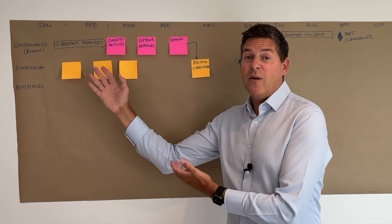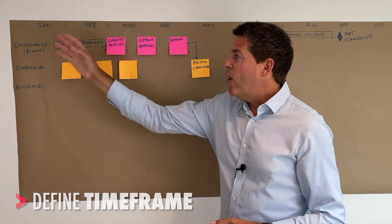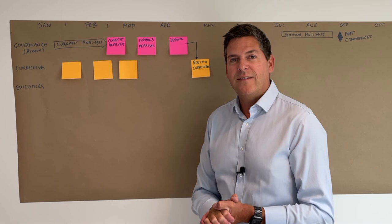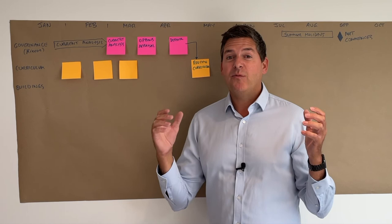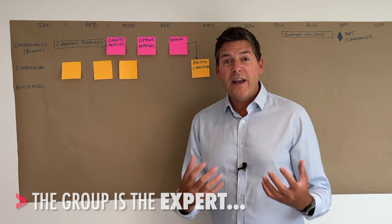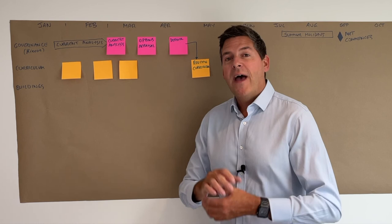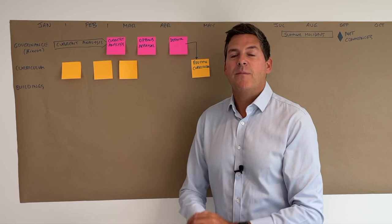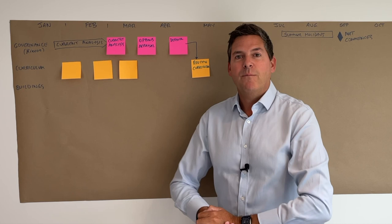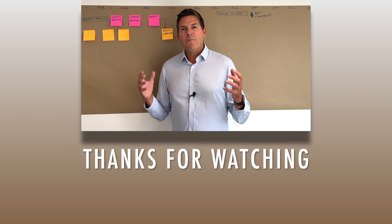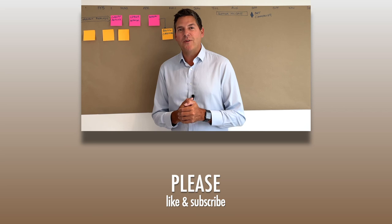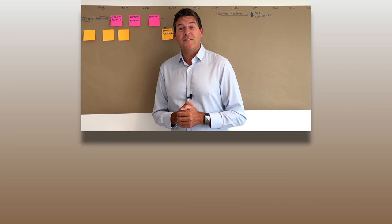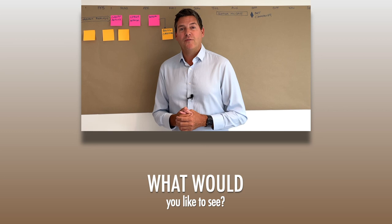So there we are — brown paper project planning. Start with your brown paper or whiteboard, give yourself a timeline across the top, work out the work streams with the group, then get the group telling you what needs to happen under each one. The power of the facilitator is that the group is the expert — they bring the content, you guide the process. They tell you what needs to happen, how long it'll take, and who's best to do it. Your job is to keep guiding them and keep focused on each work stream until it's done before moving to the next. If you liked this video, please like and subscribe, and add a comment if you want us to look at your challenge.